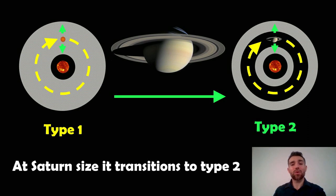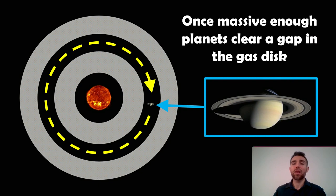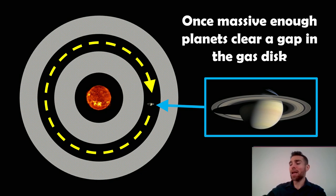To get a type 2 migration the planet transitions from type 1 — as it grows bigger and bigger, once it gets to around Saturn size (always dependent on the properties of the disk), it will transition into type 2 where it actually begins to clear out a gap. I've put an image of Saturn there, but it doesn't mean the planet will have rings — it may have a gas disk around it. It's not going to look like Saturn at all; it's more a representation of the sort of size it gets to.